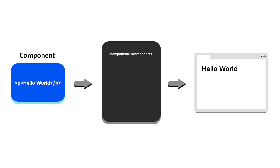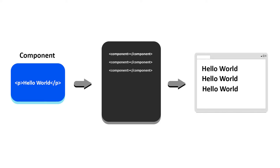Take a look at this scenario. We have a component that displays some text. If we want to reuse the component, it will display the same thing and behave the same way. This is unwanted behavior. Whenever we want to reuse a component, we want to be able to control its behavior so that it behaves differently than other components of the same type.